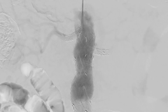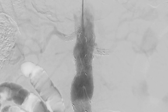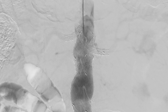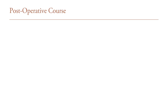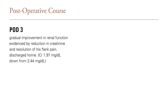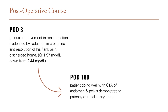The brachial artery was then repaired primarily with interrupted Prolene, and the wound was closed in layers. Postoperatively, the patient did well and was discharged home on postop day 3, with significant improvement in renal function and complete resolution of his flank pain. He was seen again at 6 months and continued to be pain-free, and a CTA performed at the time demonstrated patency of the grafts.